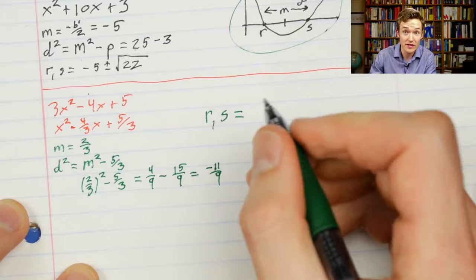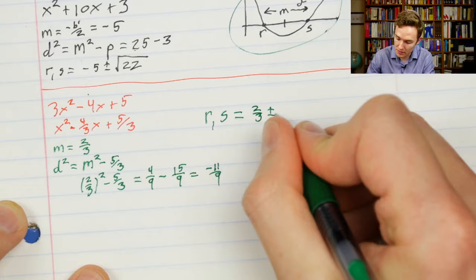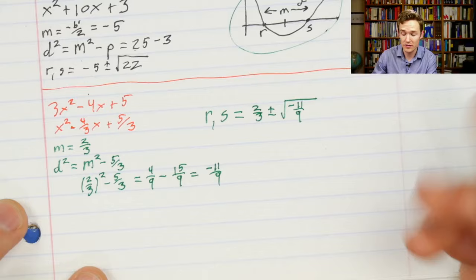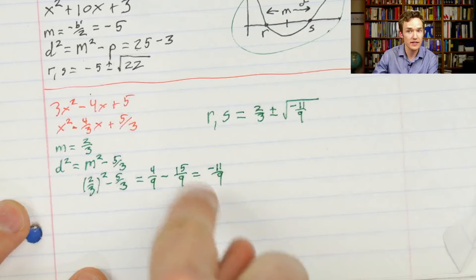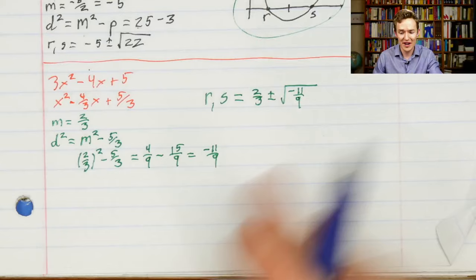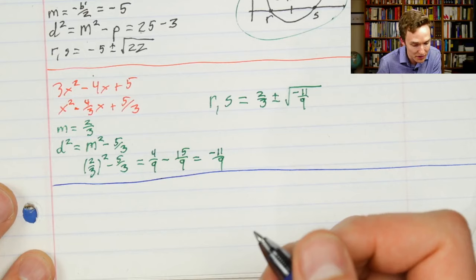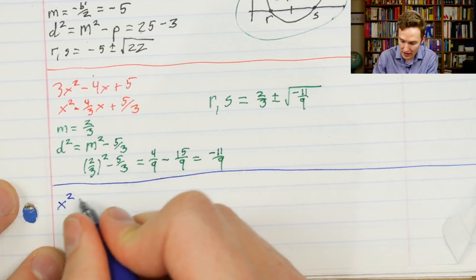So our final answer — the roots of this polynomial — are 2/3±√(−11/9). In this case the square root is of a negative number, so we have complex roots. There's actually a very fun way to think about how complex roots play into this difference-of-squares perspective on the quadratic formula. Let me try it with a simpler example: x²−6x+10. Going through the same process, m=3, and d²=9−10=−1. So our two roots are 3±i.